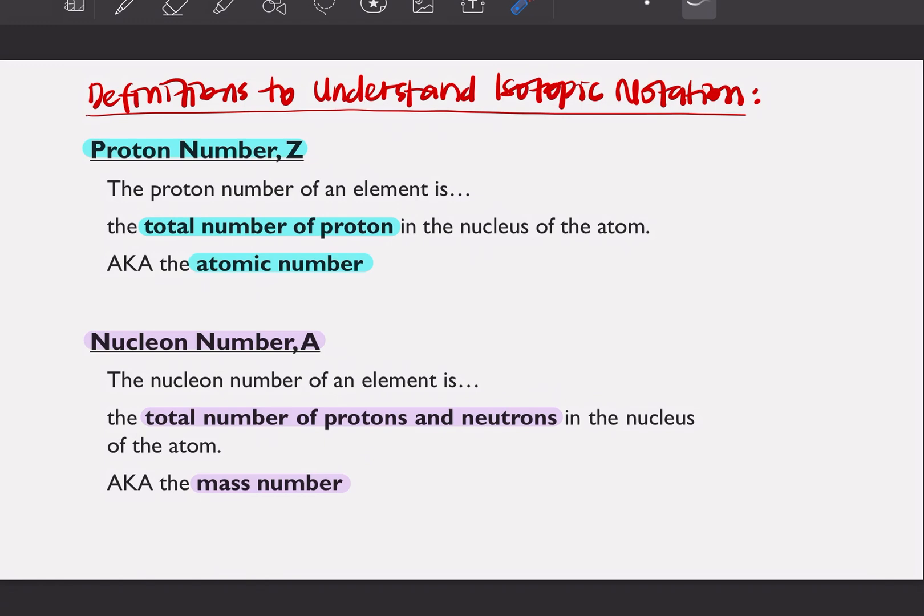So that means that bila awak nak kira nucleon number, awak kena campur number of protons dengan number of neutrons. So another name for nucleon number is also mass number.